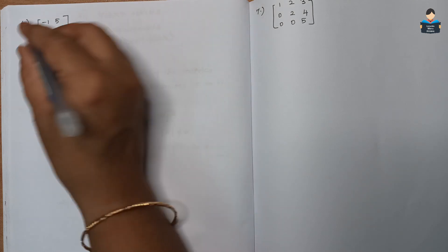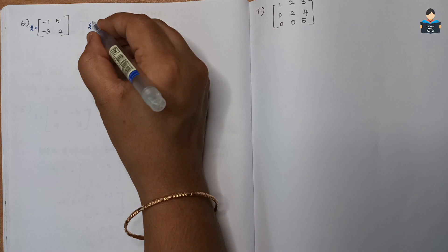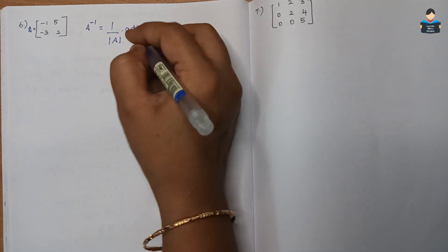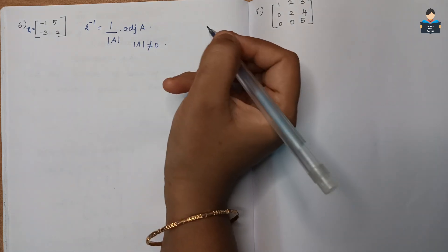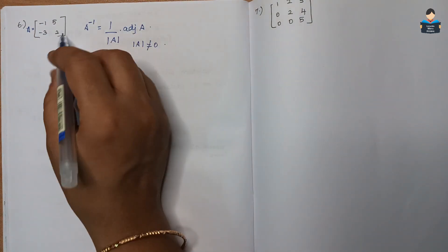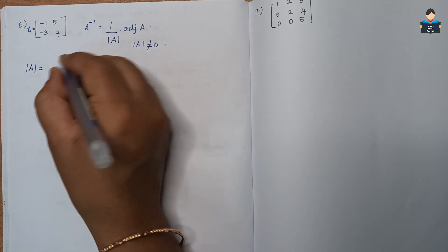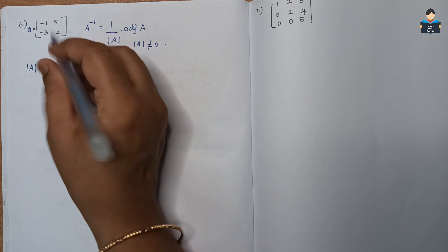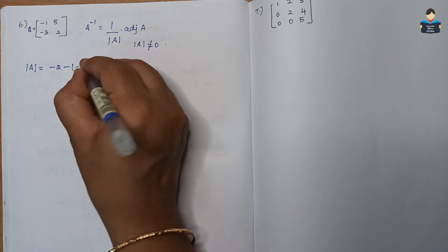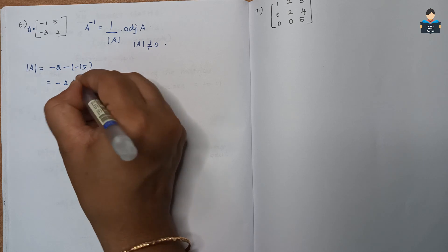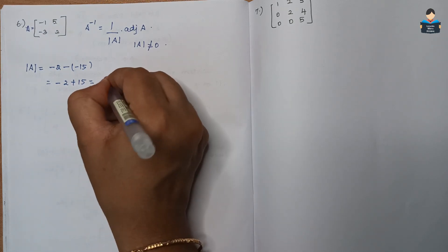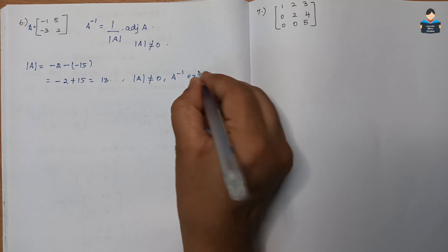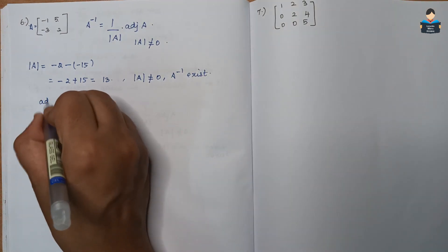For question 6, this matrix is equal to A. A inverse equals 1 by determinant of A into adjoint of A, and determinant of A should not be equal to 0. Finding the determinant: 2 into minus 1 is minus 2, minus minus 3 into 5 is minus 15. So minus 2 plus 15 equals 13. Determinant of A is not equal to 0, therefore the inverse exists.